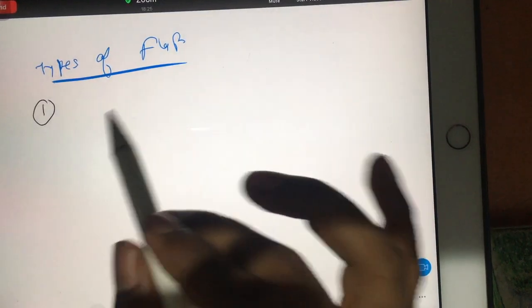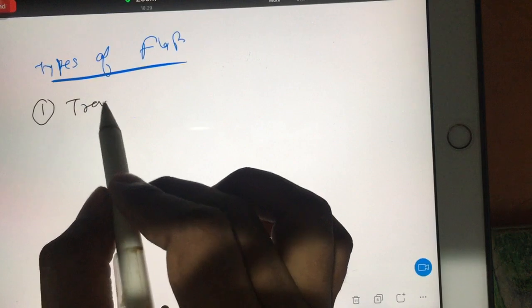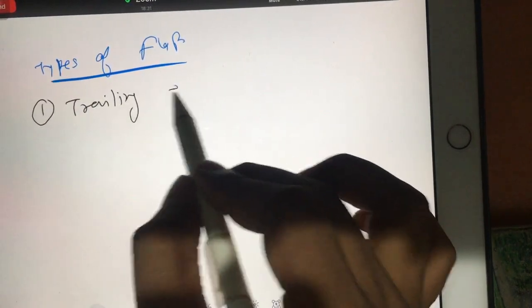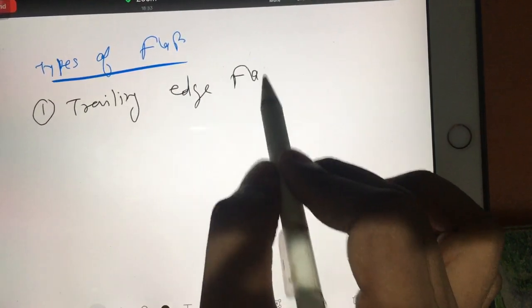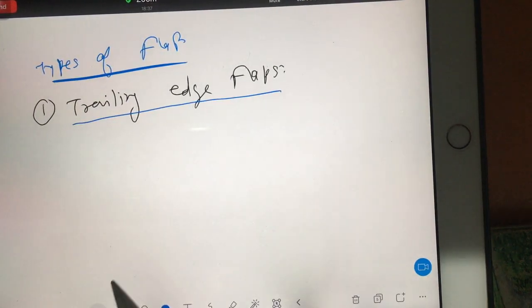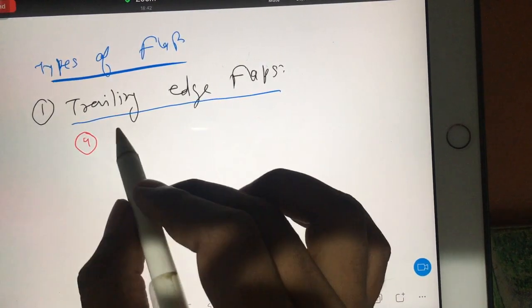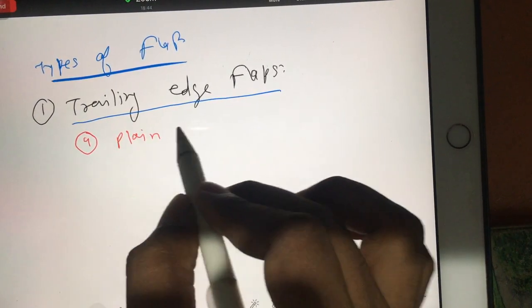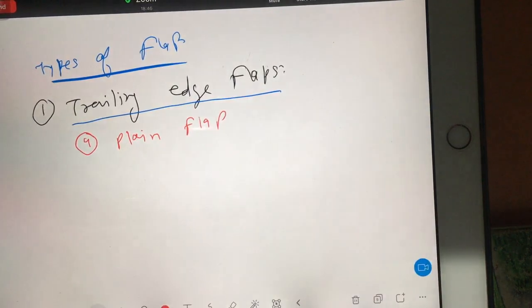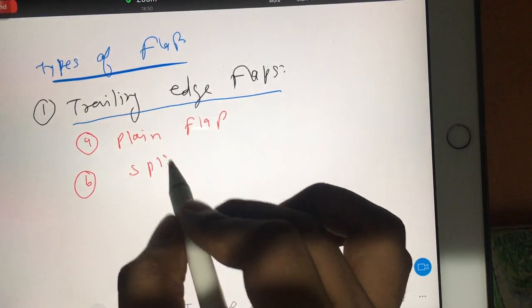In that, you take first type of flap, what is attached on trailing edge. So for that you write trailing edge flaps. And there are several types of trailing edge flaps. In that you have first category that is known as plain flap, and then you have split flap.